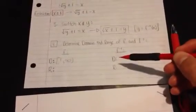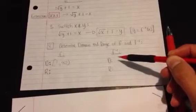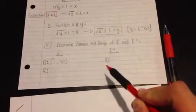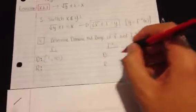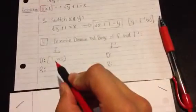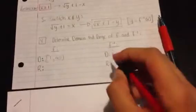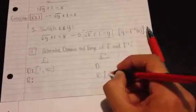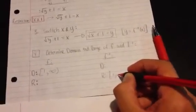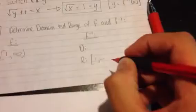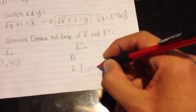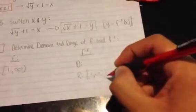So, when you switch the x and y values like you did up here, what that's going to do is that, in the inverse, the domain of the regular function is going to be the range of the inverse function. So, once you find that, you can already find this one over here.